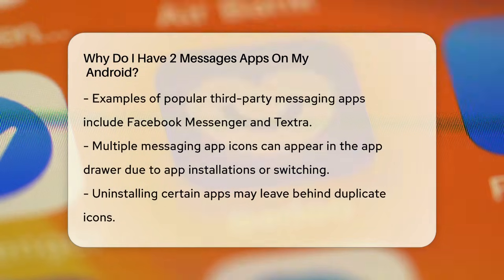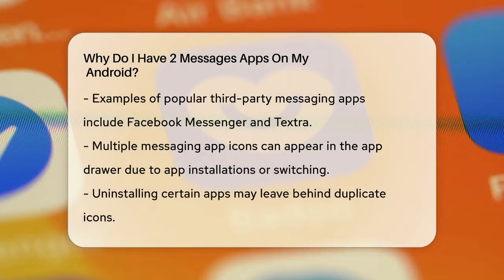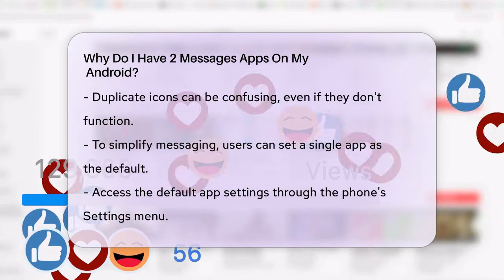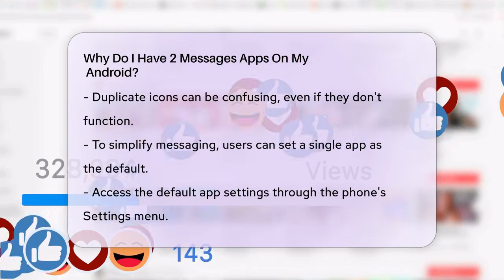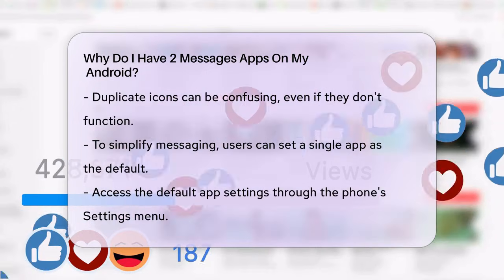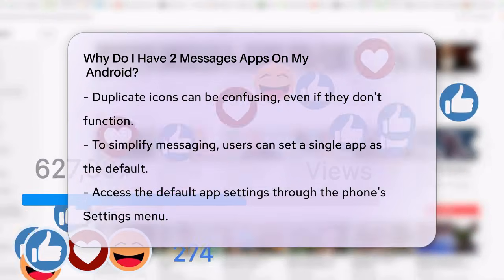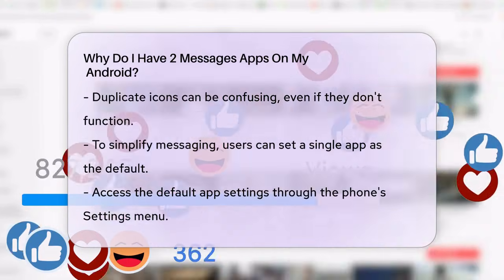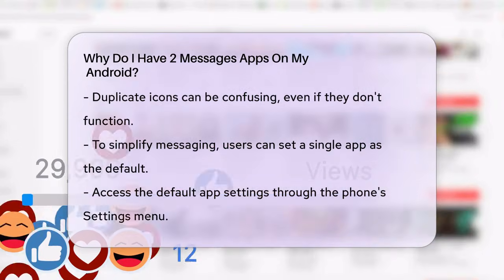Here's where things can get interesting. If you've installed multiple messaging apps, it's possible that you might see multiple icons for messaging apps in your app drawer. This can happen if you've switched between different messaging apps or if you've installed an app that also handles SMS messages. For instance, if you've used an app like SMS Popup and then uninstalled it, you might still see a duplicate icon for your messaging app. This duplicate icon might disappear when you click on it, but it can still be confusing.